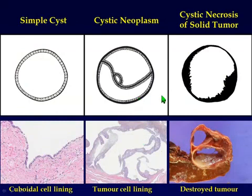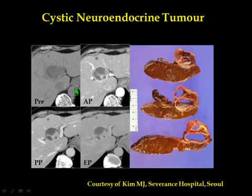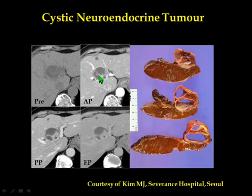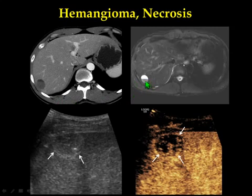Last, let's look at pathology of tumor necrosis — irregular cystic, hemorrhagic or ischemic necrosis — and sometimes there are septa. Here is a case of cystic neuroendocrine tumor. This part was solid tumor but it became necrotic, with remaining septa and hemorrhagic areas. This is a necrotic hemangioma — we thought it was metastasis, perhaps from neuroendocrine tumor — but contrast-enhanced ultrasound shows peripheral nodular enhancement, which is typical of hemangioma.